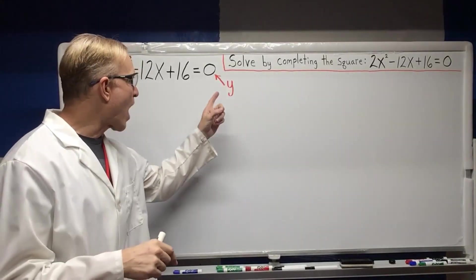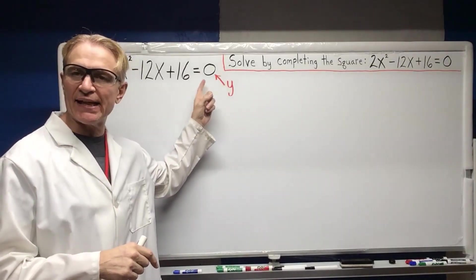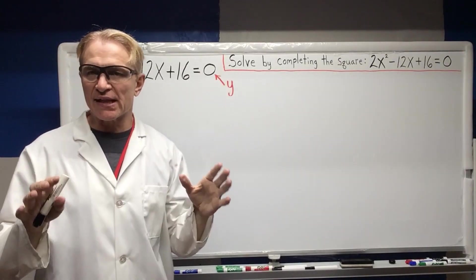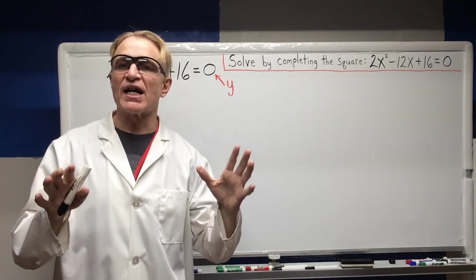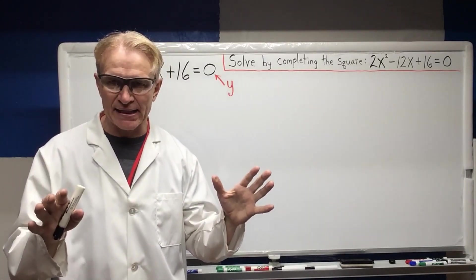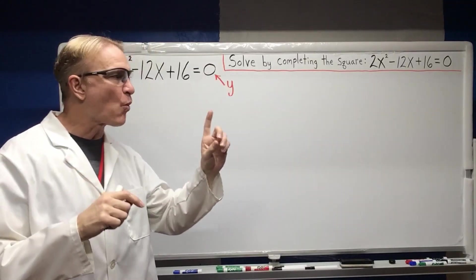Note that the Y was preset to equal zero. This is so that we can see where the parabola is crossing the X axis. All right, step one.